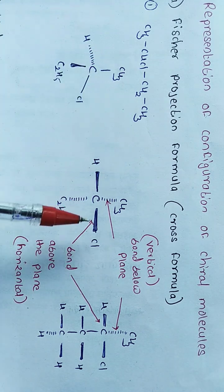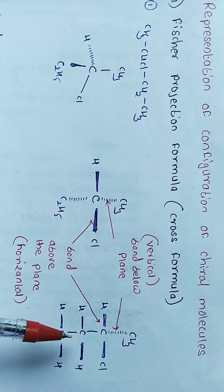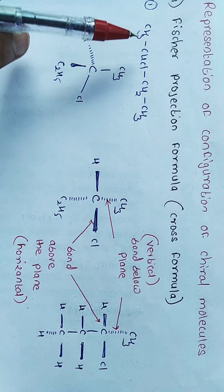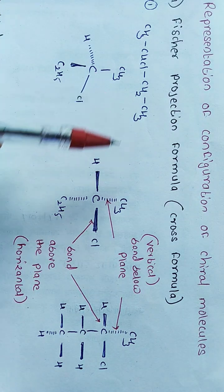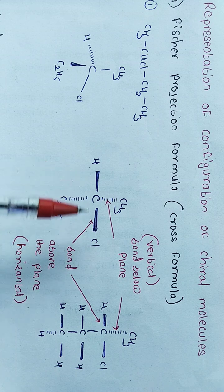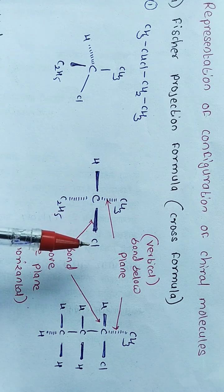It is represented by feature projection formula like this. In this feature projection formula, all carbon atoms present in molecule are represented by drawing vertical lines and remaining bonds are drawn as horizontal lines.